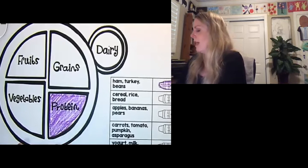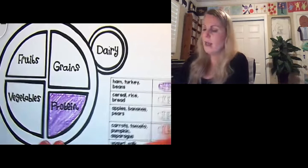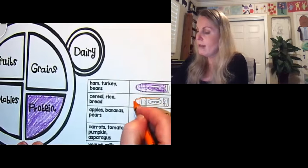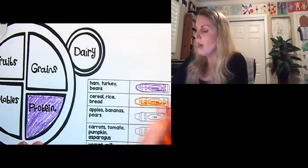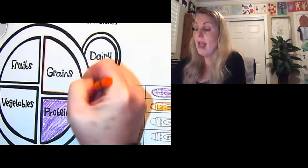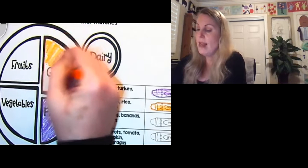The next color we're gonna get out is our orange one. For our orange one we're gonna color this crayon and it says cereal, rice, and bread. So when we're talking about cereal, rice, and bread, we're talking about grains. Like the little red hen, how she cut down the wheat and she made the bread. That's grains.